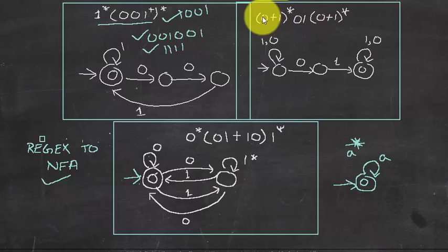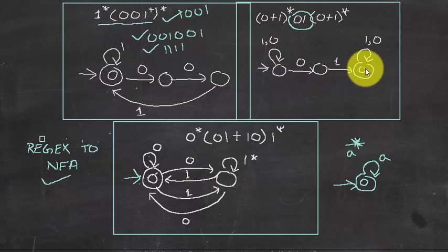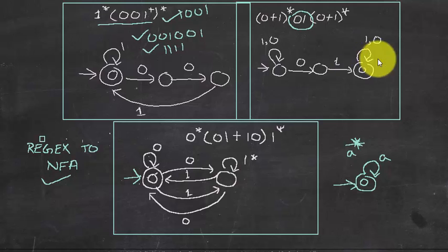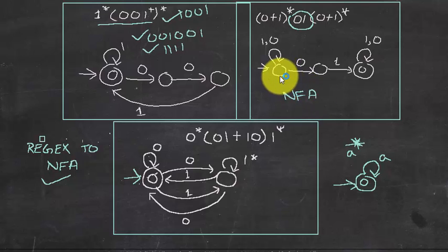The next regular expression accepts any string as long as the substring 01 is present — we don't care about what comes before or after. So 0, then 1, and we don't care what we get at the beginning or end. This is an NFA; if it were a DFA, every state would have transitions for all possible input alphabets.